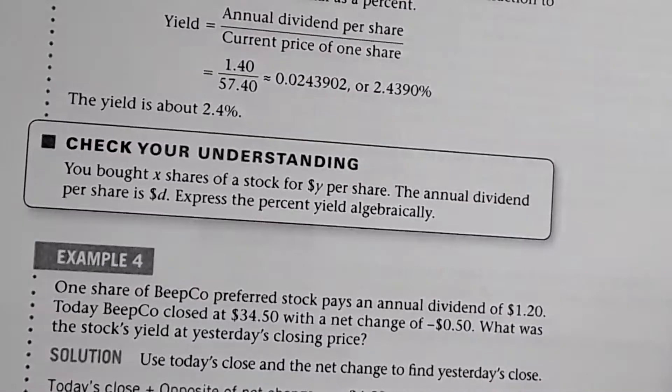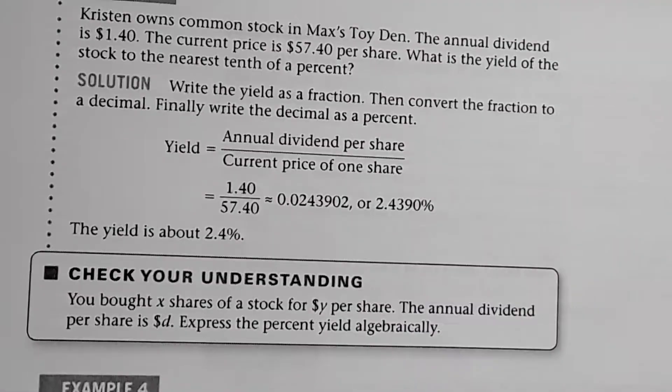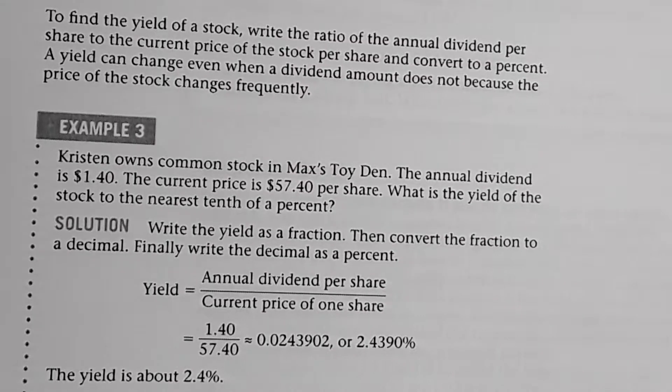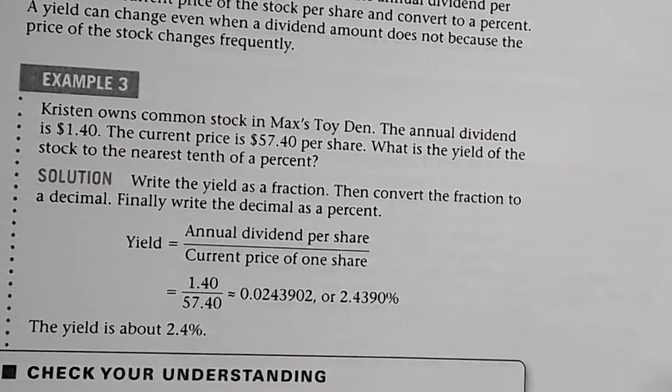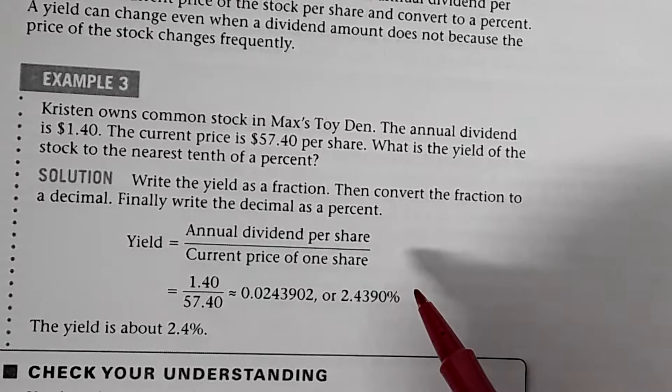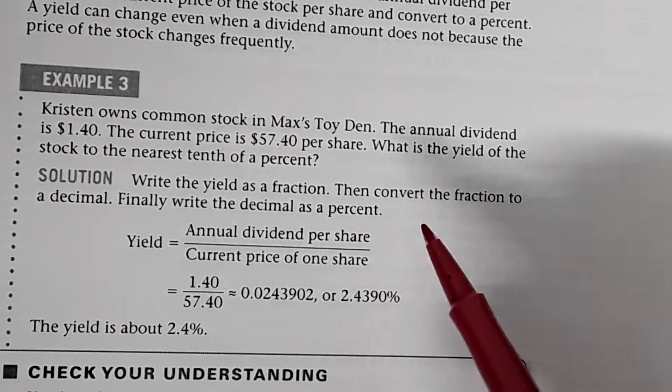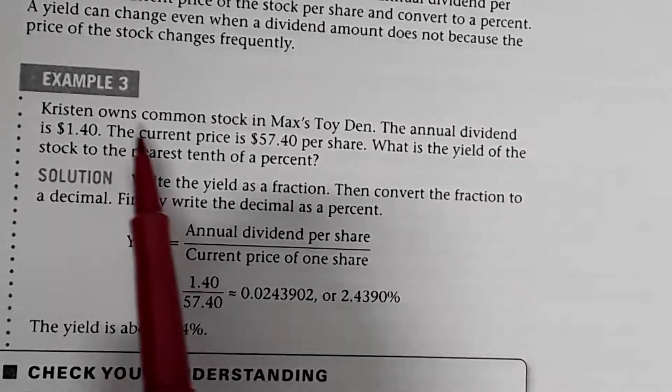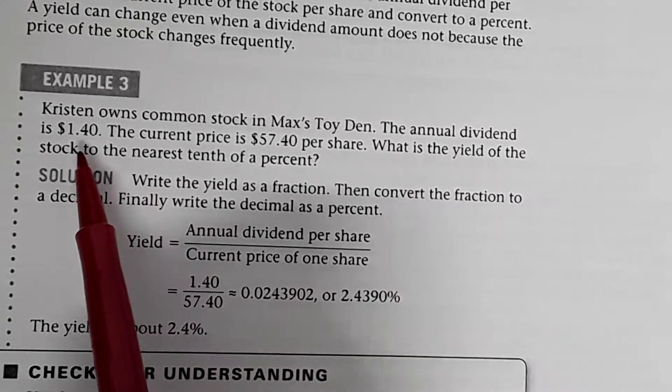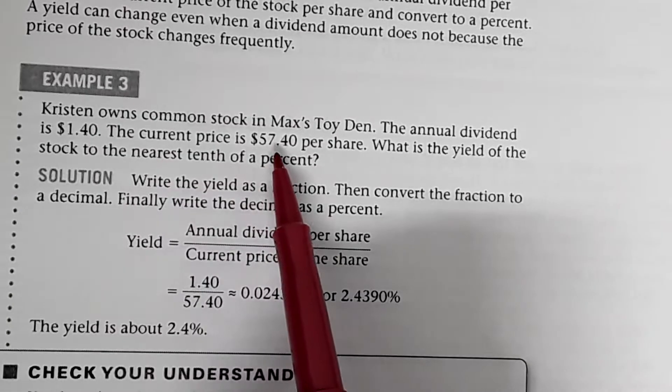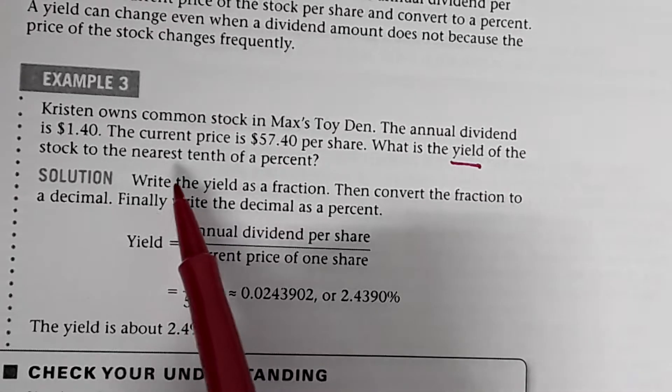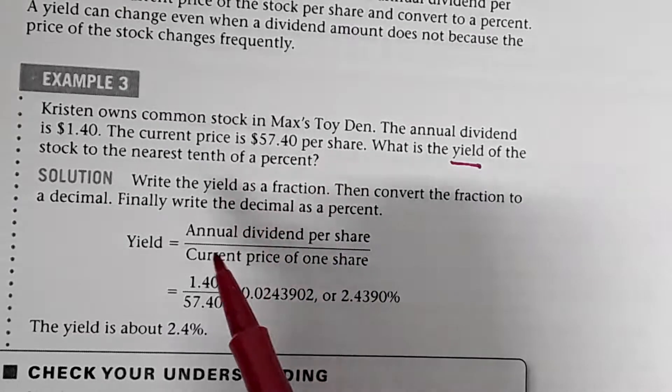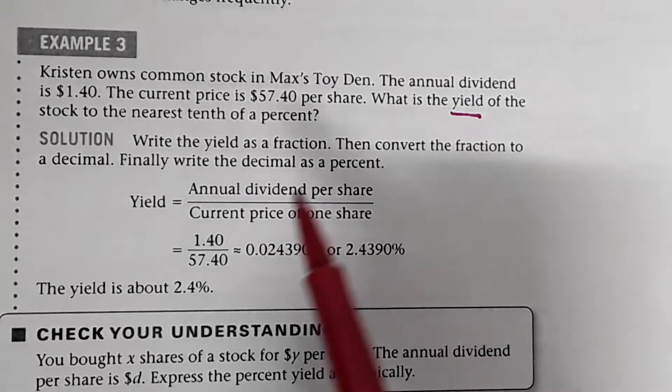What if we have a situation like this where we know the dividend and we know the price and we want to know what the yield is. The yield is basically kind of like the rate you're earning on those shares. So Kristen owns common stock in Max's Toy Den. The annual dividend is $1.40. The current price is $57.40 per share. What is the yield of the stock to the nearest tenth of a percent? Again, it's more like what kind of interest are you earning for owning that stock?